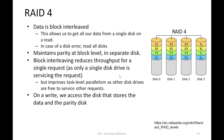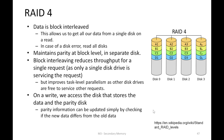On a write in RAID4, we need to access the disk where the actual data is stored and also the dedicated parity disk. This means back-to-back writes all must access that single parity disk and can only be processed serially. Upon a write, parity is recalculated and updated only if there is a difference; otherwise, the original parity is retained.